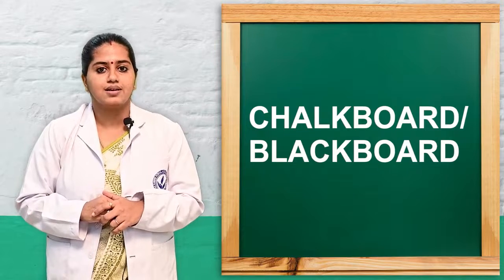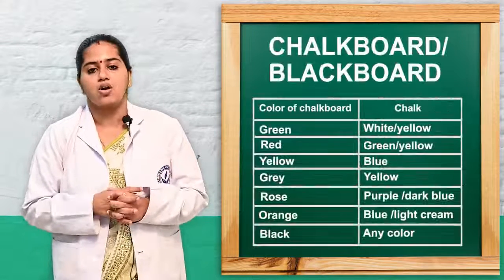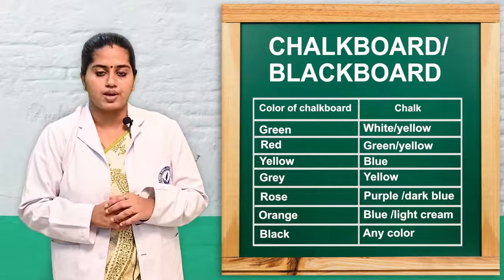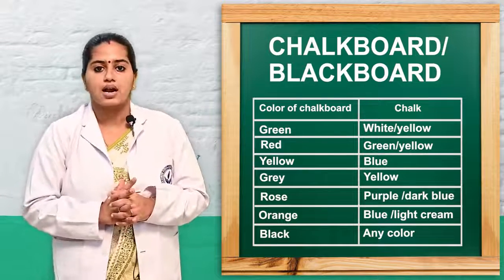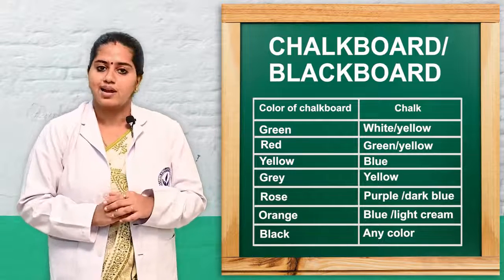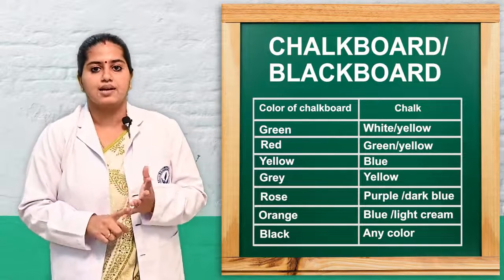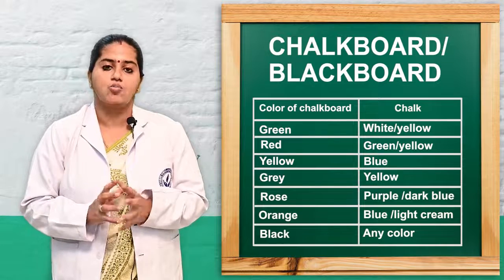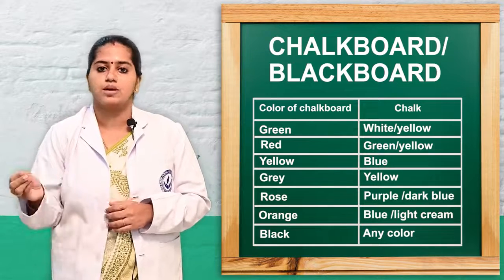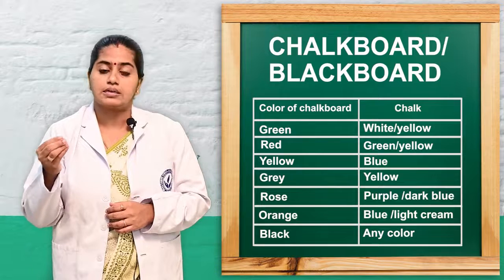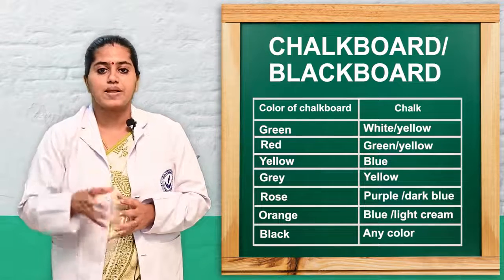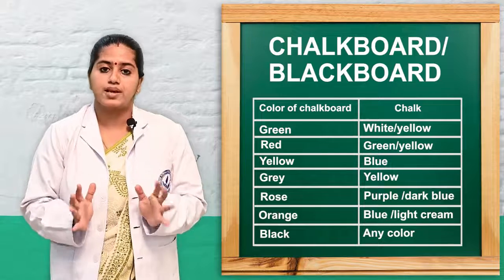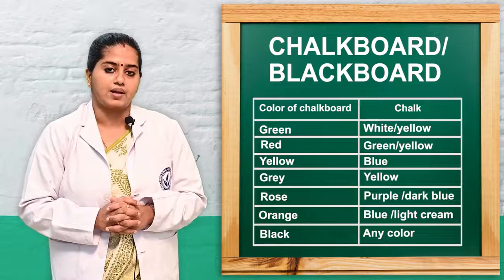Next we will see what are the different colors of chalkboard. Commonly used chalkboard is the blackboard, and on the blackboard any type of colors can be used. Other types of color chalkboards are there — green color, red color, gray color, and yellow color types of chalkboard are there. In these types of chalkboards, suitable colored chalk pieces have to be selected in order to display content while taking the class. Commonly used chalkboard is blackboard.